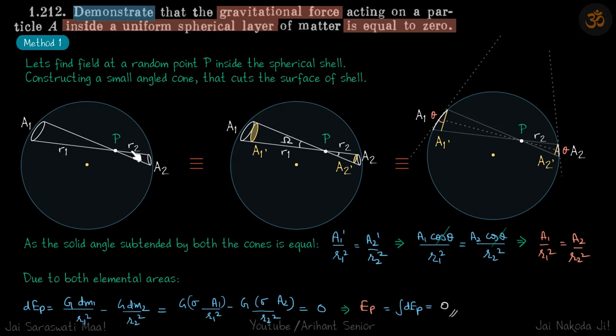Let's say the distances are r1 and r2. Let's find field at the random point P inside the spherical shell. Constructing a small angled cone that cuts the surface of shell, we are more comfortable with the right angled cone, so let's take a perpendicular area A1 dash and here the perpendicular area is A2 dash.